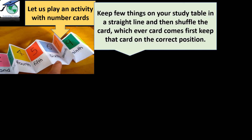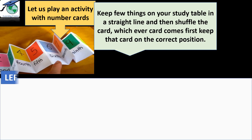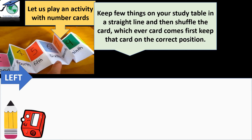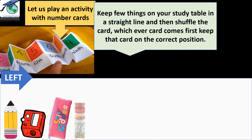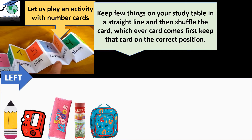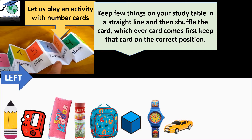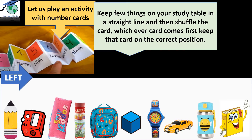Let us play an activity with number cards. You can see these are the number cards. Keep a few things on your study table in a straight line and then shuffle the cards. Whichever card comes first, keep that card on the correct position. For example, you have the study table and from the left you will first keep the pencil, sharpener, eraser, pouch, color pencil, lunch bag, a cube, a watch, a toy car, a school water bottle, and a book.